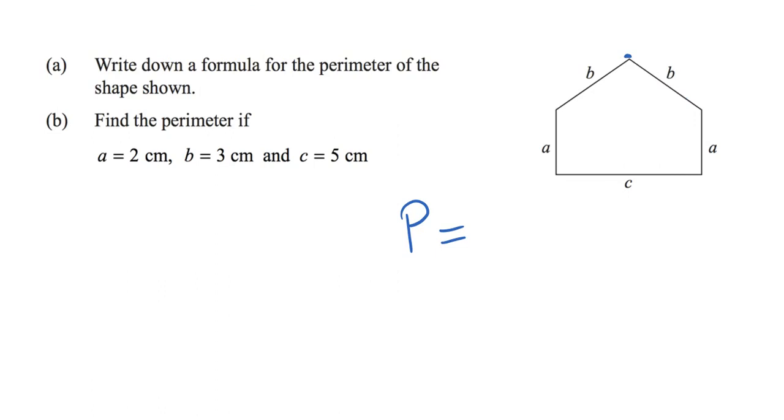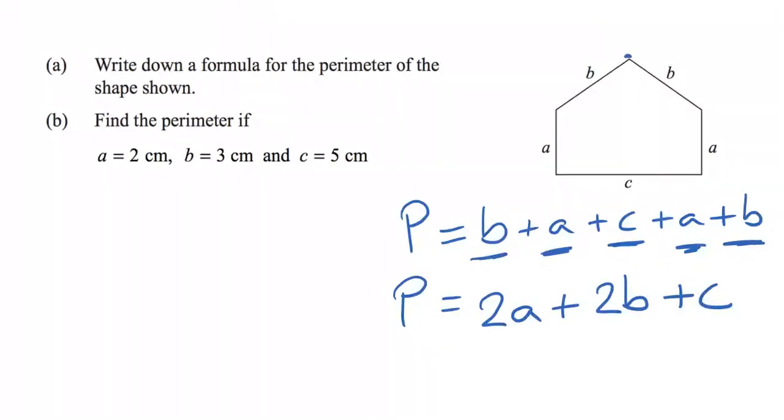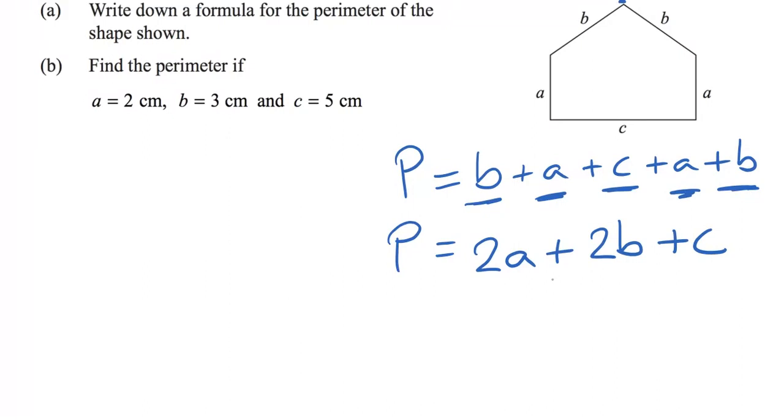So our perimeter will be B plus A plus C plus A plus B. We've kind of done it already, but of course, we can simplify this. We have an A and an A together there, so that means we have 2A. We have a B and a plus another B, so we have 2B. We also have this C. So a simplified version of the formula would be the perimeter is equal to 2A plus 2B plus C.